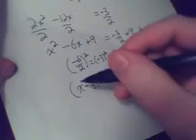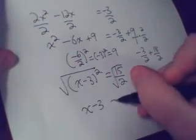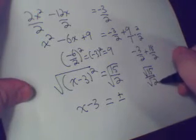And now, just take the square root of both sides. So I'm going to add x - 3 = ± , again, I've got to clean this up, √15 / √2.